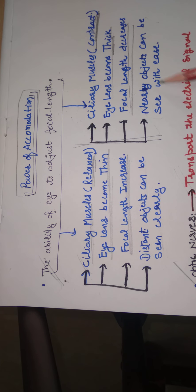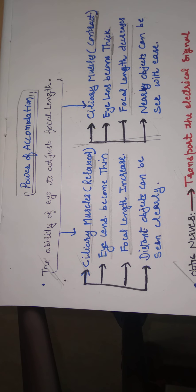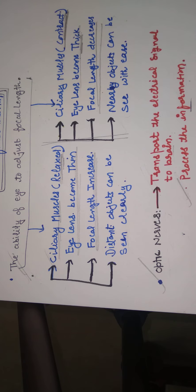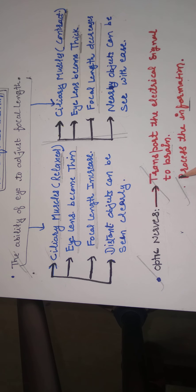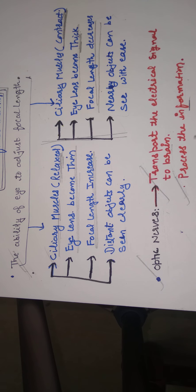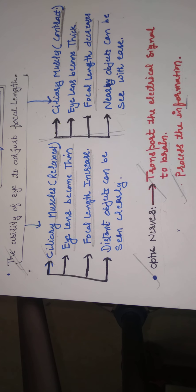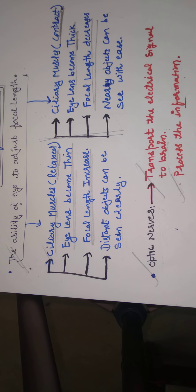We can see the nearby object with ease. Optic nerve function: transport electrical signals to the brain and process the information. Aqueous humor provides the power to the cornea.